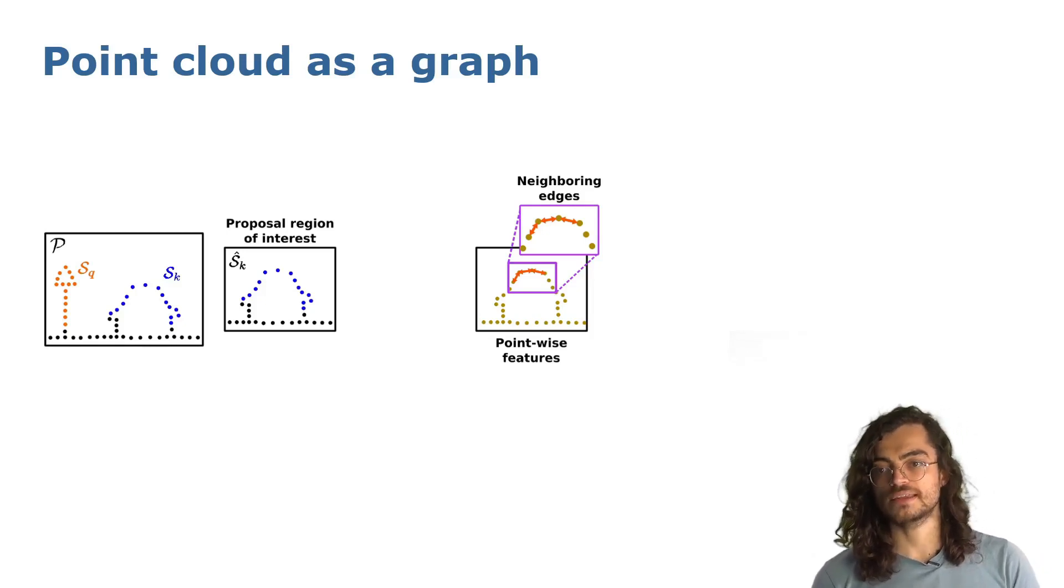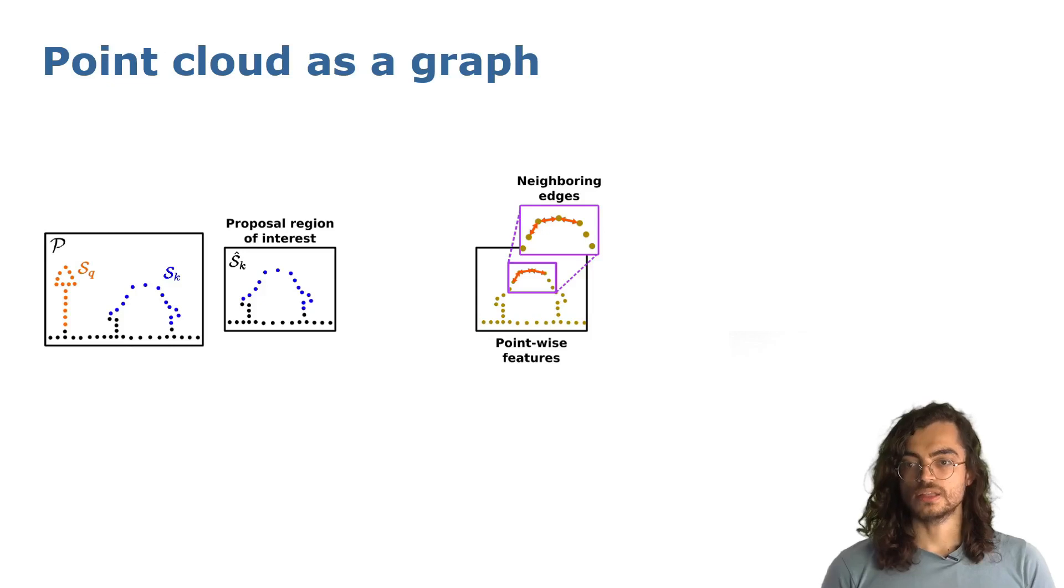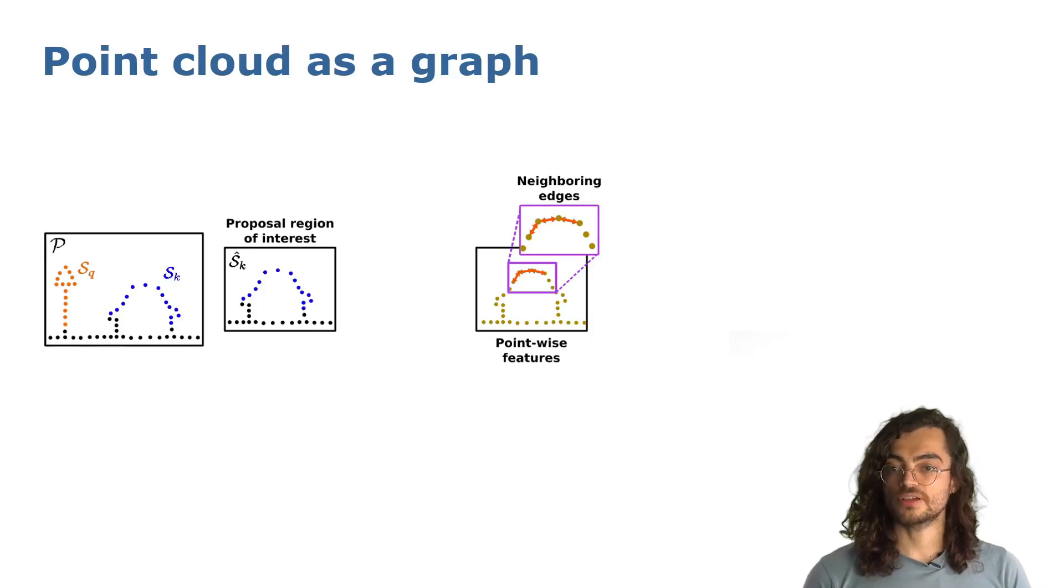For images, the weights of the edges are computed as the affinity between each pixel RGB value. LiDAR point clouds, however, represent each point only with an intensity measurement, which brings less information than an RGB value.